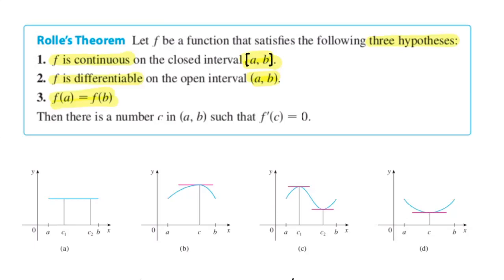So what does Rolle's Theorem guarantee? It says there has to be at least one number — there may be more — between A and B where the derivative is zero. You have a continuous, differentiable function with f(A) equal to f(B), and the derivative has to be zero somewhere between. In figure B there's one value of C; in figure C there are two values where the derivative is zero; in figure D there's just one. In all cases, you can see horizontal tangent lines drawn at those values.